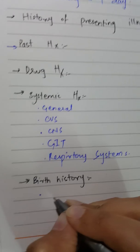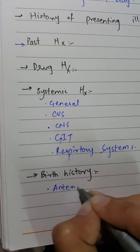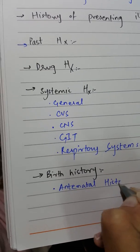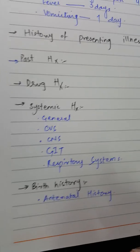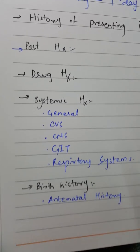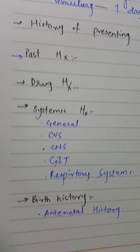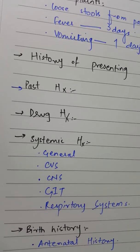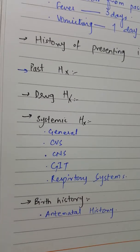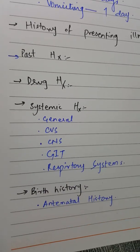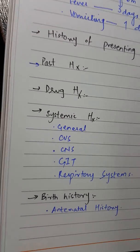The first subheading for birth history is antenatal history — that is, before the birth of the baby. In this, you ask the mother about her pregnancy, how she got to know about it, any diseases she suffered during pregnancy, any medications, supplements of folic acid and calcium that she was taking, the ultrasounds, the number of ultrasounds, and visits to the doctor.